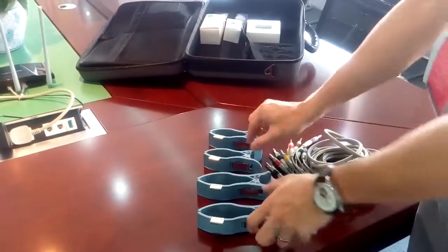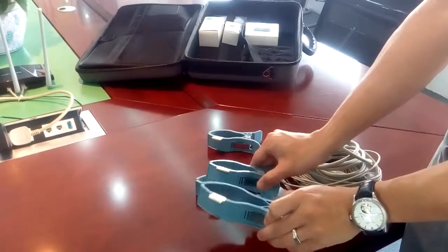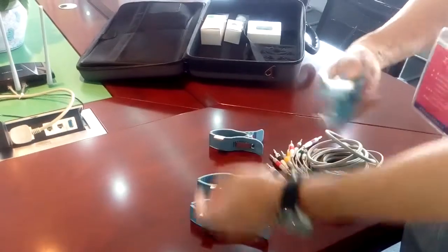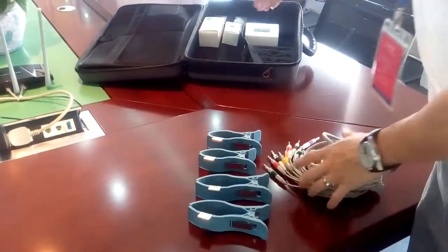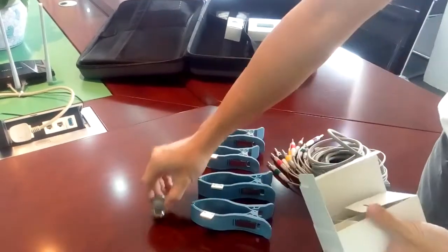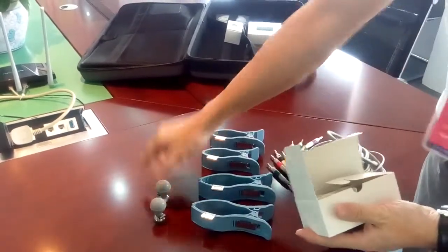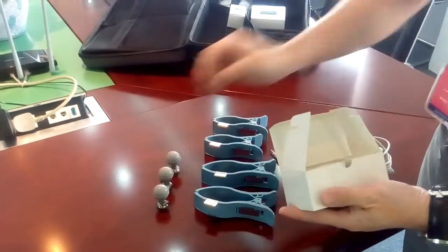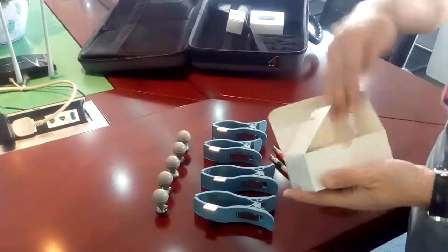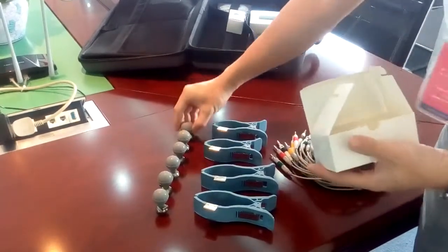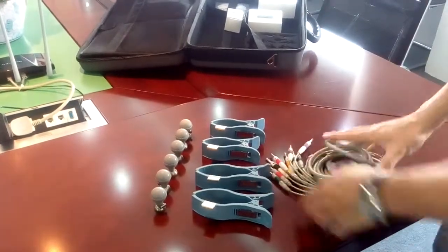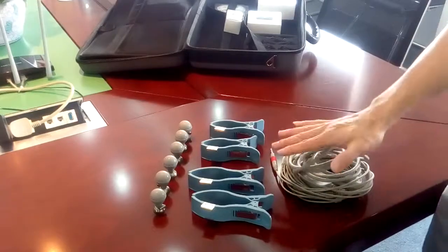This is for legs. You can see the size is a little bit bigger than the arm clamps. You have six suction electrodes for the patient's chest. So this is the standard configuration.